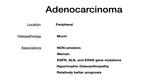The big high-yield point is that adenocarcinoma is highly associated with women and non-smokers. That non-smoking piece is really high-yield — small cell lung cancer and squamous cell cancer are highly associated with smoking, but adenocarcinoma is the one the test writer will go after if they don't give you a smoking history or if they give you a female patient. Associated genetic mutations include EGFR (epidermal growth factor receptor), ALK (anaplastic lymphoma kinase translocation), and KRAS — a proto-oncogene. Just know that if you see them, the test writer is going after adenocarcinoma.